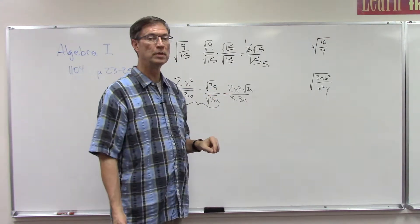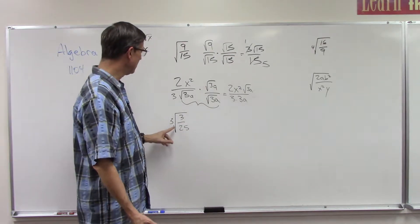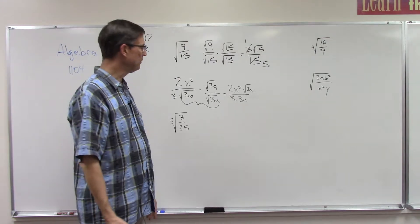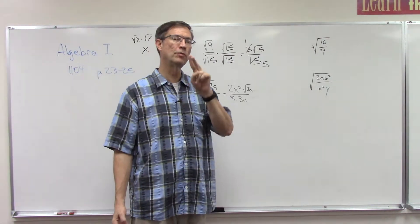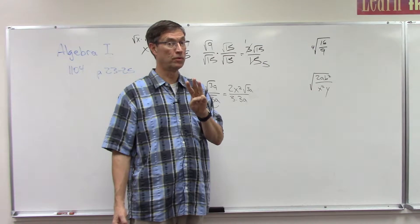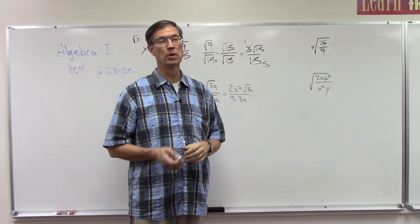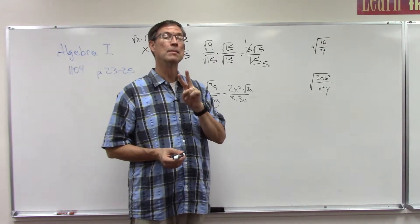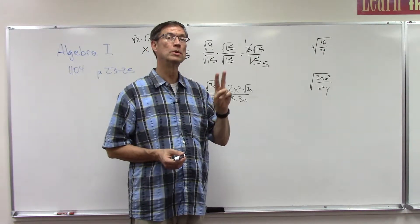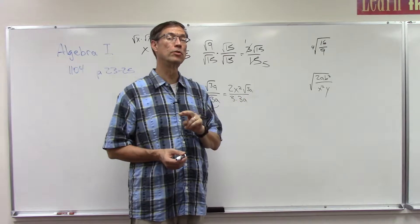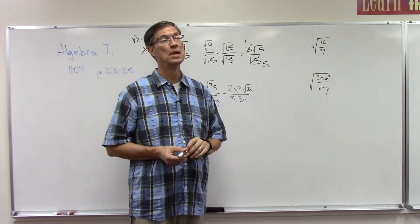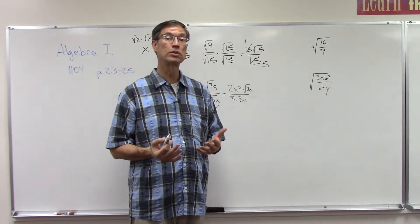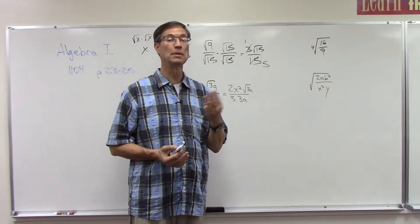Now let's take a problem with a third root — that's a little tricky. Remember, the third root means what number times itself times itself equals the number. For example, the third root of 8 is 2, because 2 times 2 times 2 is 8. The third root of 27 is 3, because 3 times 3 times 3 is 27.